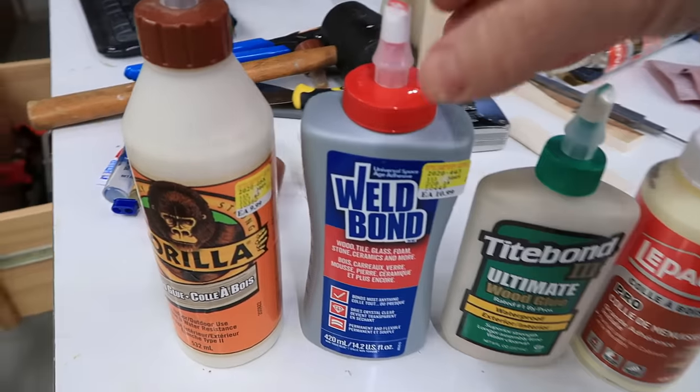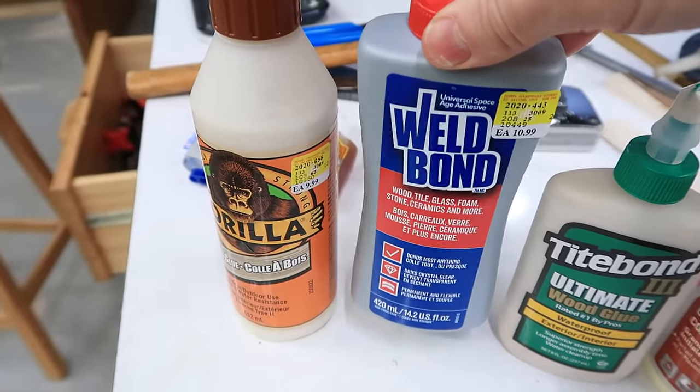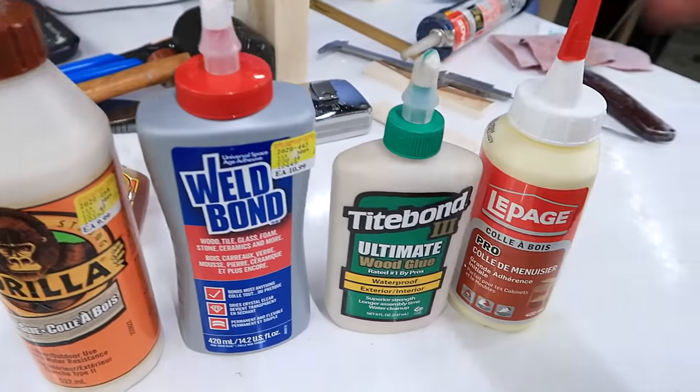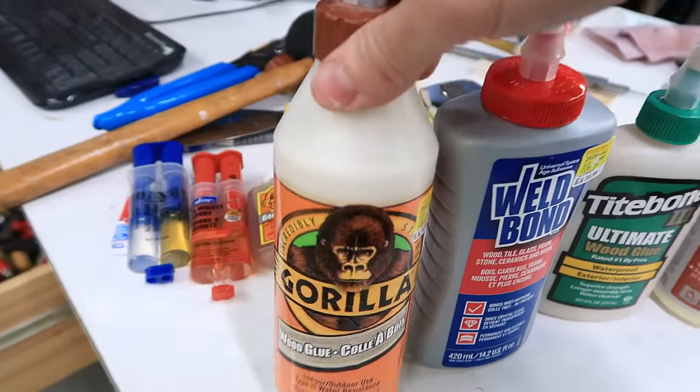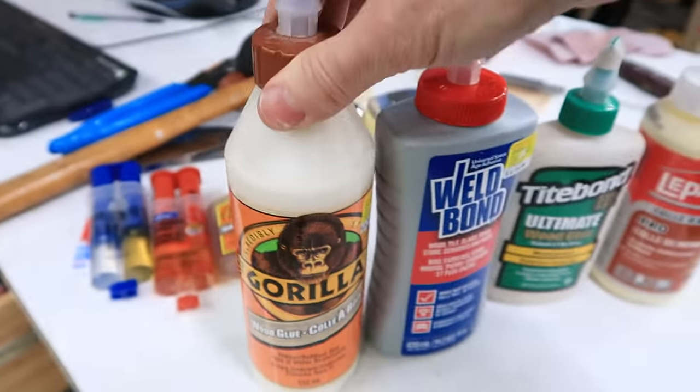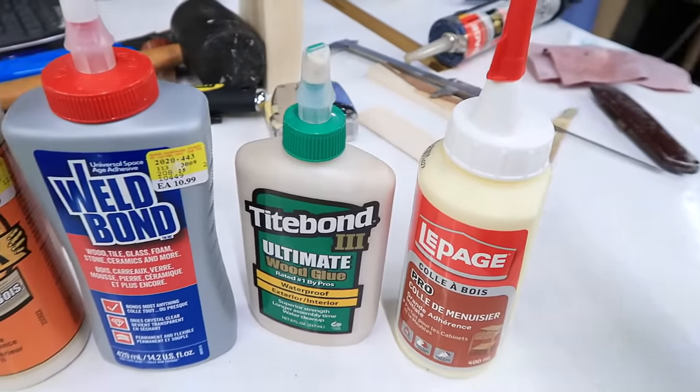In terms of going bad, I think weld bond is the worst. In fact, the first bottle I bought from the hardware store had already gone bad and I had to go back for another one. Tight bond three goes bad, not as fast, and I think gorilla glue goes bad a little bit slower than the tight bond three. And of course, this doesn't go bad at all. And it also may depend on what you're gluing because even the glues that didn't tear a chunk out of the softwood did better with the hardwood, so I think that softwood was just maybe a little bit more oily than the maple, and so the glue didn't stick to it as well.